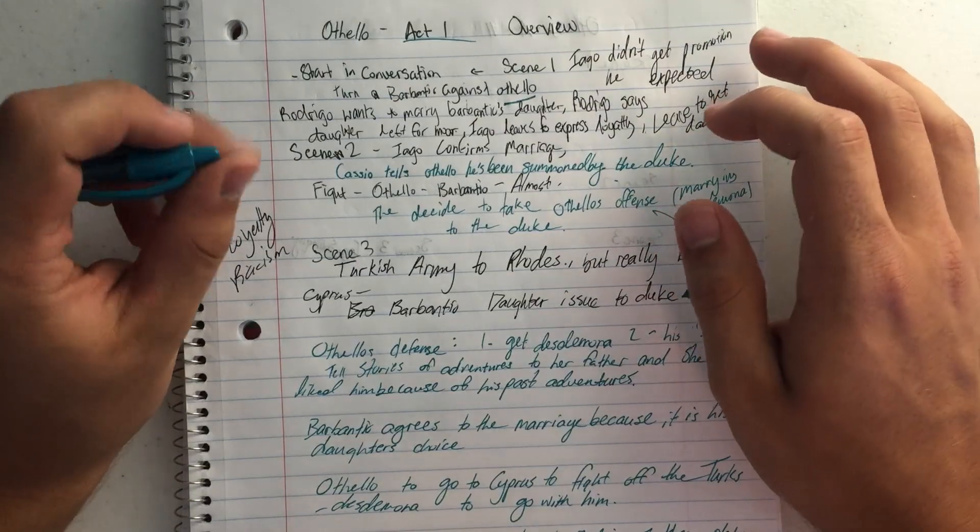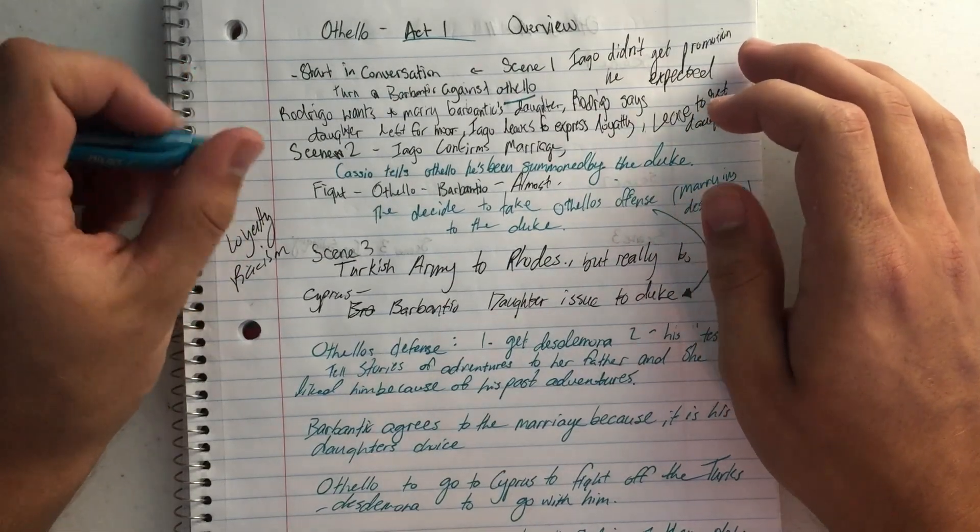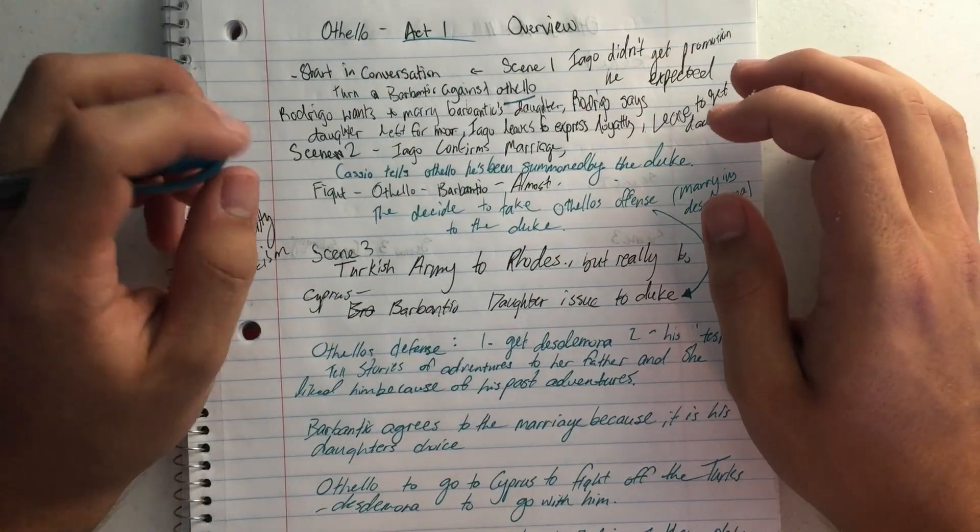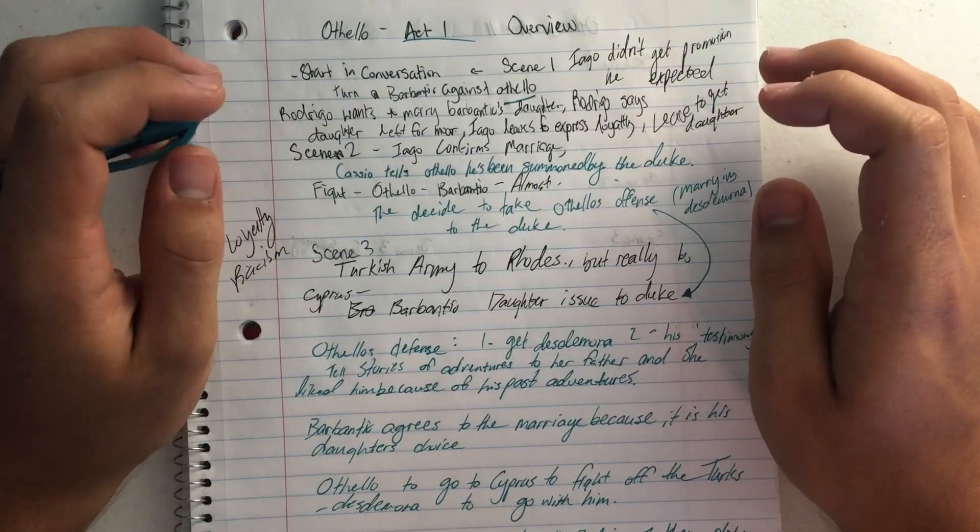They tell Brabantio, hey, your daughter's run off with Othello, the Moor. So they rouse Brabantio to kind of go after him.